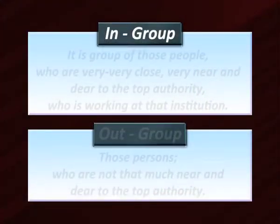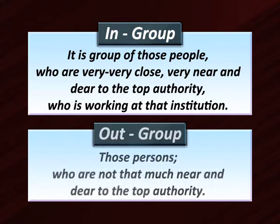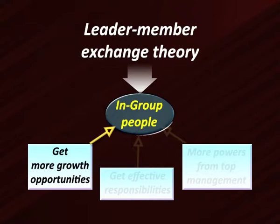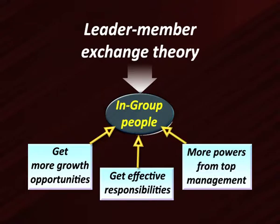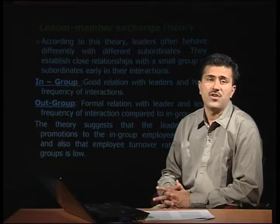The in-group consists of people who are very close and near and dear to the top authority of the institution. Out-group people are those persons who are not that close to the top authority. This theory states that in-group people usually get more growth opportunities, effective responsibilities, and more power from top-level management because they are in the inner circle.